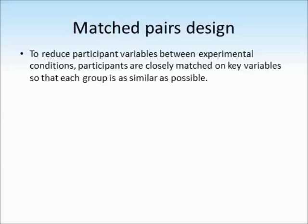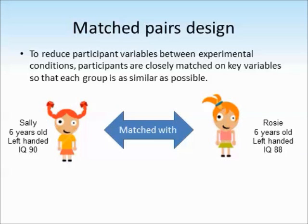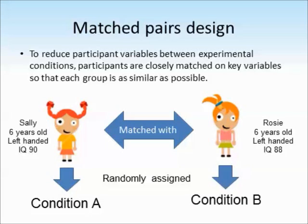The last type of experimental design is called a matched pairs design. This aims to reduce participant variables between different experimental conditions by matching participants as closely as possible on key variables to make each group as similar as possible. For example, participant Sally is six years old, left-handed, and has an IQ of 90, and we'd match her with Rosie, who is also six, also left-handed, and has a very similar IQ score. They're unlikely to match completely, but once matched, participants are randomly assigned to conditions — Sally to condition A and Rosie to condition B — to ensure we're comparing like for like and have minimised extraneous participant variables.